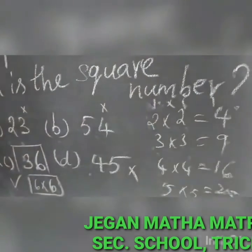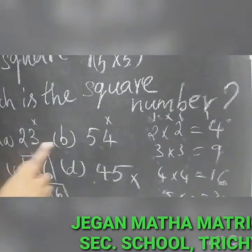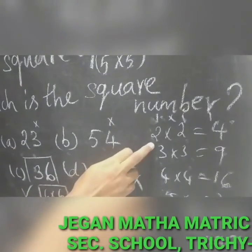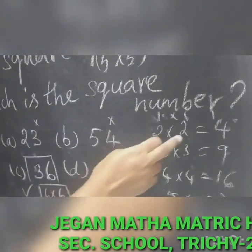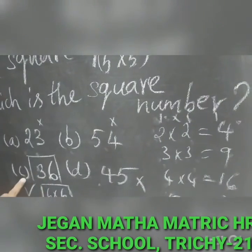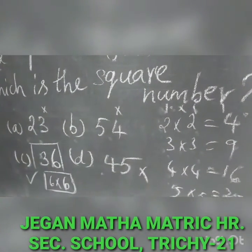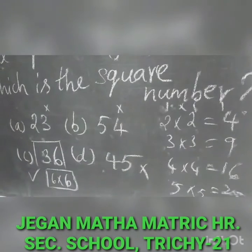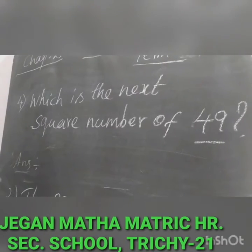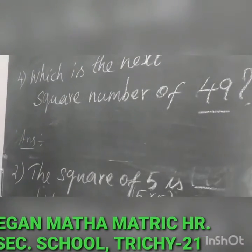So which of the following is a square number — you select the correct one. Square number means you multiply the same number by itself. So option C, 36, is the only correct answer because 6 multiplied by 6 equals 36.